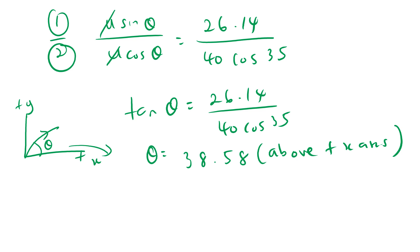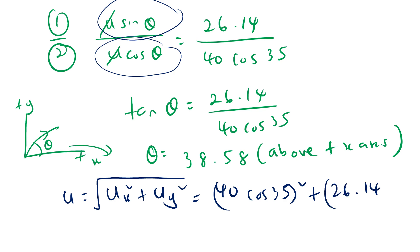We need to find the magnitude. The magnitude, we need to find by using the formula U equals square root of UX squared plus UY squared. You have UX here, 40 cos 35 squared plus your UY, 26.14 squared. So square root. If I put my calculator, 40 times cos 35 squared plus 26.14 squared, I will get my answer 41.92 ms⁻¹. So that is our final answer.